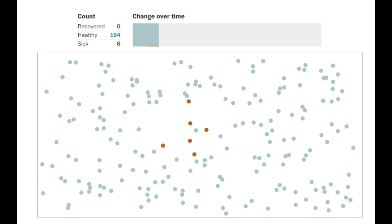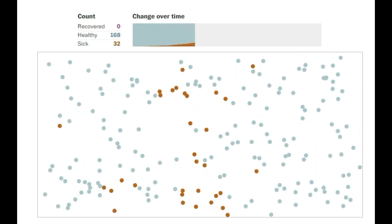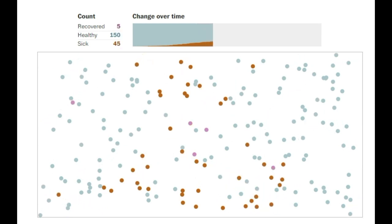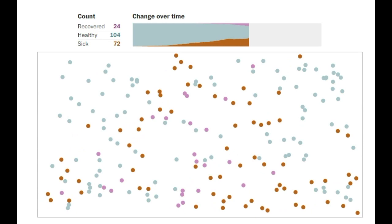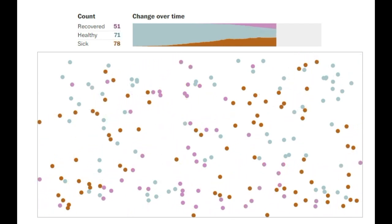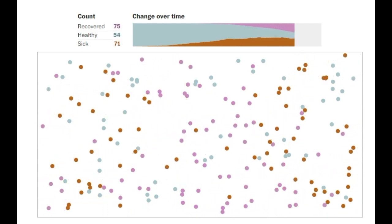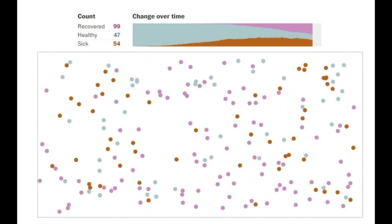Now let's look at a simulation where only a quarter of the population moves. You can clearly see that the spread of the disease goes much slower than before. This is what we try to do with social distancing.